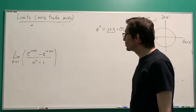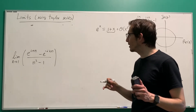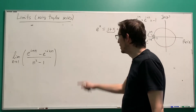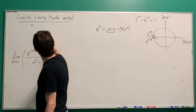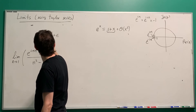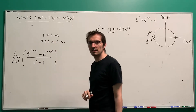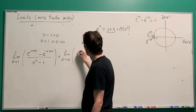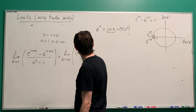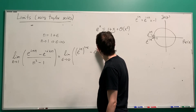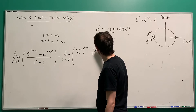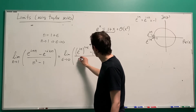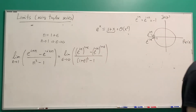Let's solve it by Taylor expansions. The first thing we do is transform it, because we want to apply Taylor expansions — we want things going to 0. To neglect higher powers, x needs to go to 0. So let's do a change of variables: define epsilon so that n equals 1 plus epsilon. When n goes to 1, epsilon goes to 0. We write the limit as epsilon goes to 0, with e to the i pi(1 plus epsilon) minus e to the minus i pi(1 plus epsilon), divided by (1 plus epsilon) squared minus 1.